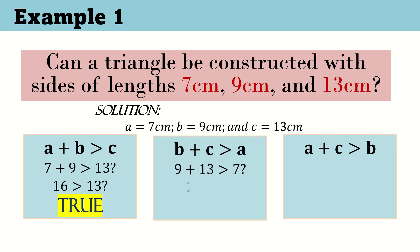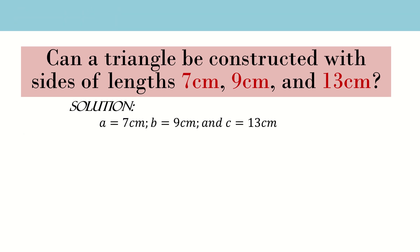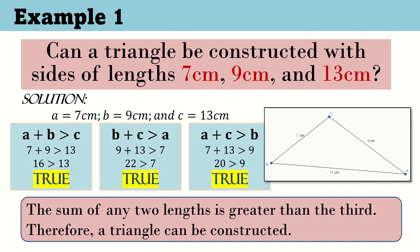Next, let's add the 2nd and 3rd sides: 9 plus 13 is 22 cm. Is 22 greater than 7? Yes, 22 is indeed greater than 7 — it satisfies the inequality. Lastly, let's add the 1st and 3rd sides and compare to the 2nd side: 7 plus 13 is 20, and 20 is greater than 9. Since all three conditions satisfy the triangle inequality theorem, we can conclude that a triangle can be constructed using sides 7, 9, and 13.